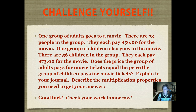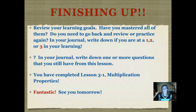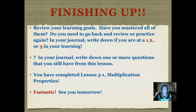Good luck and come in tomorrow to check your work in class. Finishing up — go back and review those properties if you're having trouble with them; I went over them carefully in the vocabulary section. In your journal, also write down if you think you're at a 1, a 2, or a 3 level in your learning. A 1 means you just don't get what we're talking about and you need to come in and get some help tomorrow. A 2 means you get it most of the time but might still be making some mistakes, like having trouble telling the commutative and associative properties apart. A 3 means you've got it, you're getting the problems correct, and you're ready to move on. Write down any questions you have. Fantastic — you have finished Lesson 3-1, Multiplication Properties. See you later.